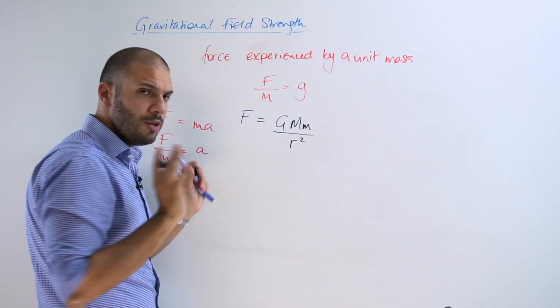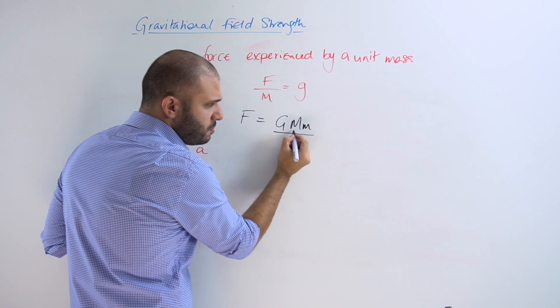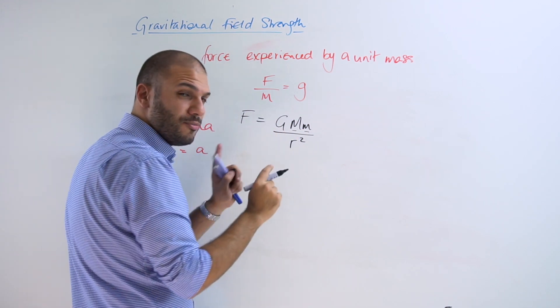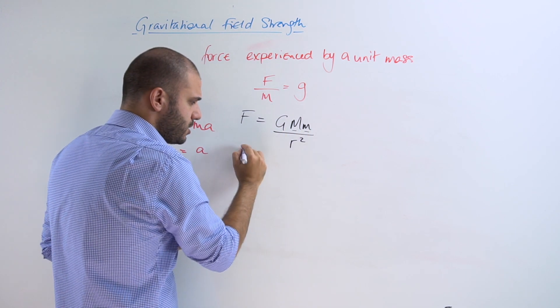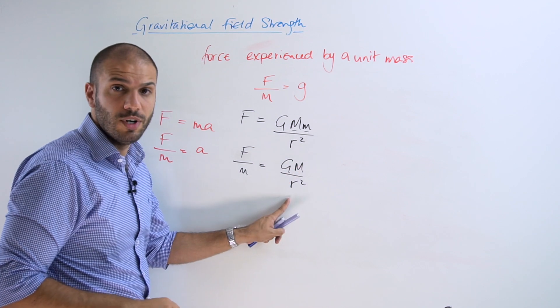Now if we consider this equation for force, this being the mass of Earth and this being our mass, if we divide the force by the mass we end up with GM over r squared.